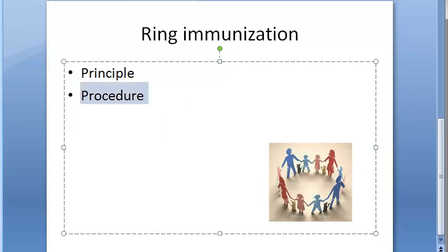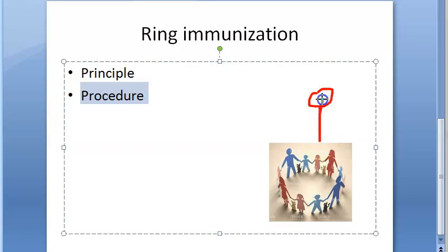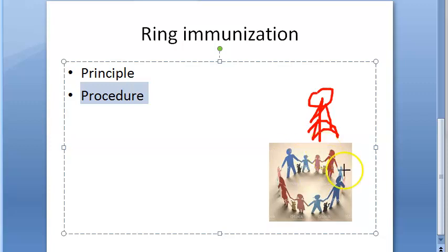Ring immunization is done following a report of a vaccine-preventable disease where a person is infected and isolated. The people who were in contact with this person will get the immunization. Usually, the doses are given for a population of 5000 or five villages, whichever is higher.